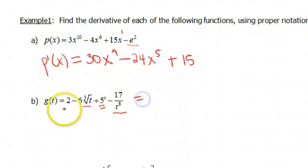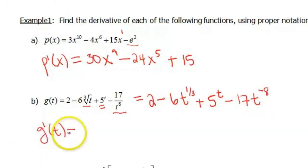So first I'm gonna do some rewriting. So 2 we're just gonna rewrite, minus 6. Now thinking back to your algebra days, the cube root of t is the same thing as t^(1/3), plus 5^t because that one really can't be rewritten anywhere. And then again thinking back to your algebra days, 17 over t^8 is the same thing as 17t^(-8). So now we can go through and take the derivative of each piece. You've gotta remember though, are we doing a power so we can do the power rule, or are we doing an exponential so we can do the exponential rule. And then just all those coefficients just come along for the ride.